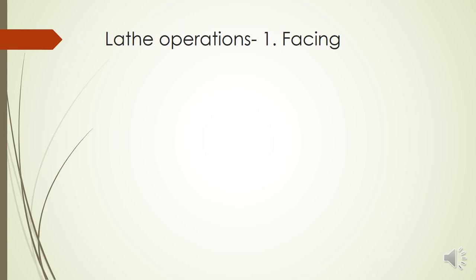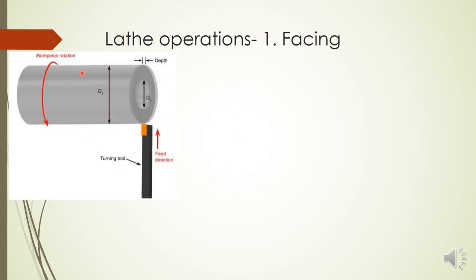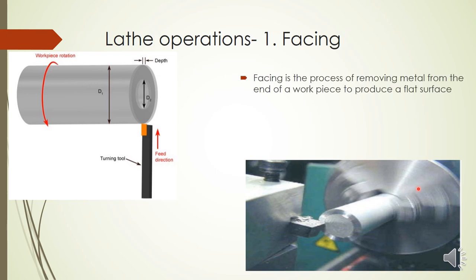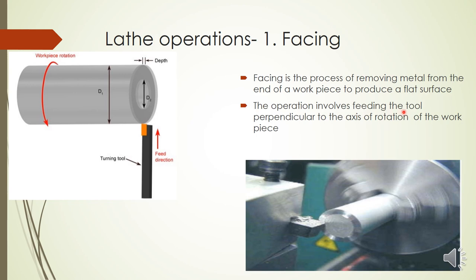The first operation is facing. In facing, the cutting tool is fed perpendicular to the workpiece through its end face. This reduces the length of the workpiece and produces a smooth, flat surface. Facing is the process of removing metal from the end of a workpiece to produce a flat surface, and it involves feeding the tool perpendicular to the axis of rotation of the workpiece.